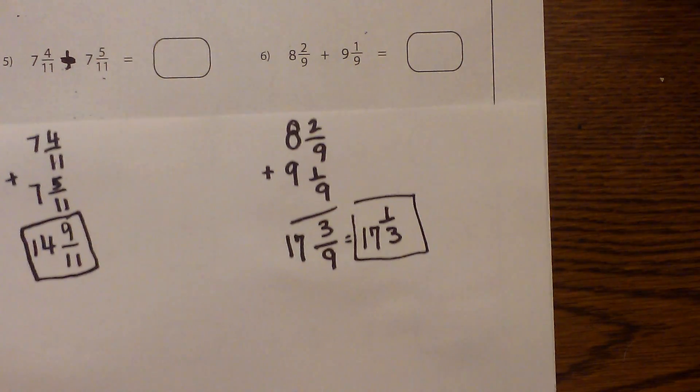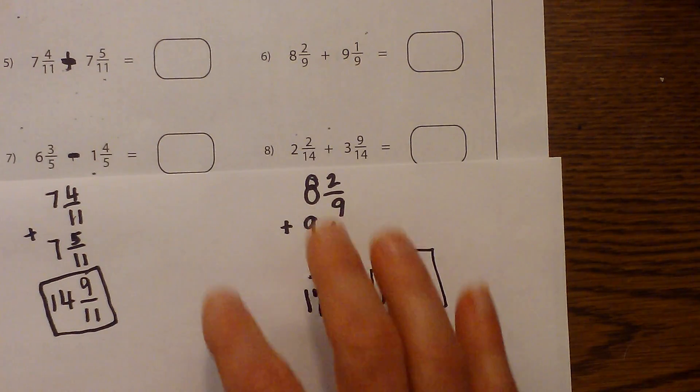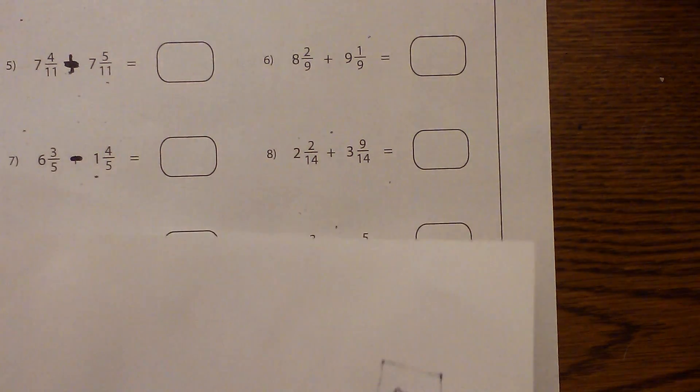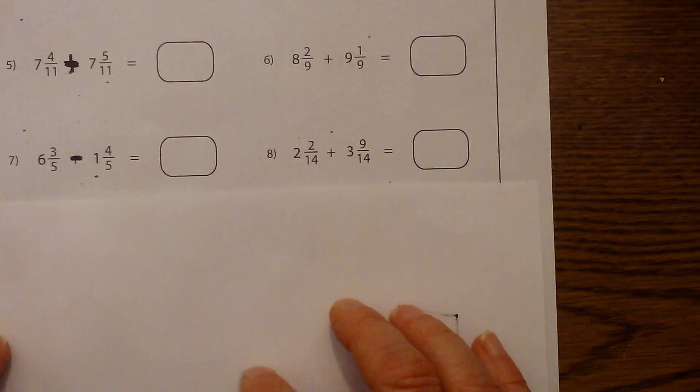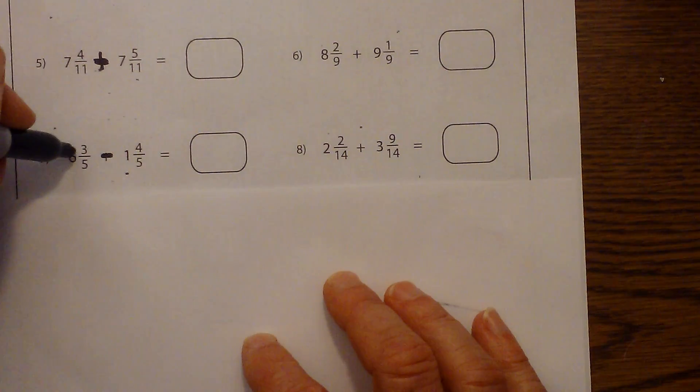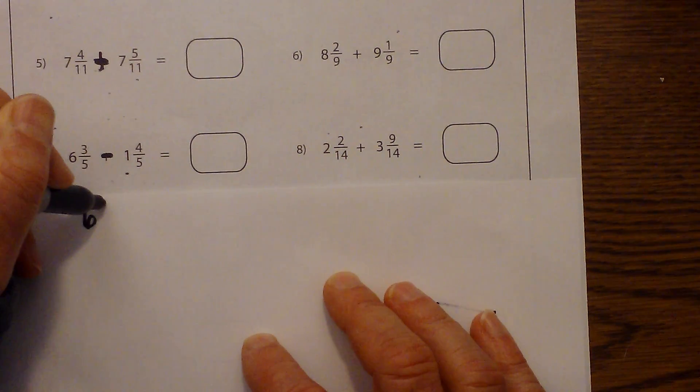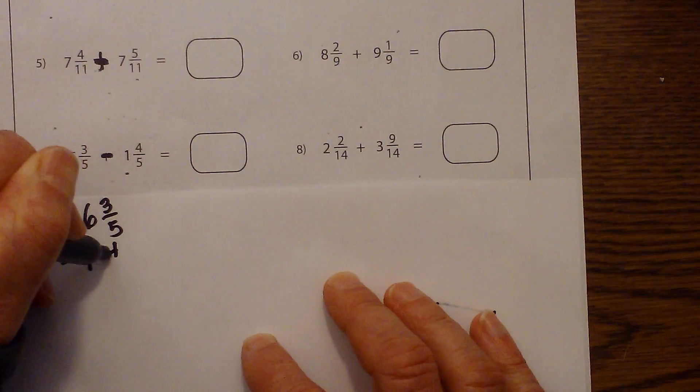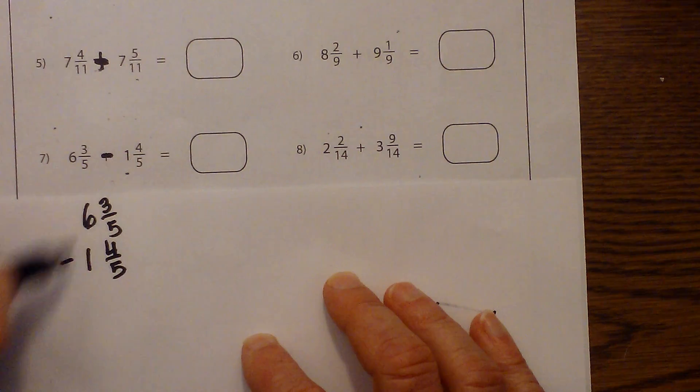And now let's look at a subtraction. So let me move this around so it's not so confusing. And we'll do one subtraction. So now let's rewrite it in vertical form: 6 and 3 fifths minus 1 and 4 fifths. And we're subtracting.